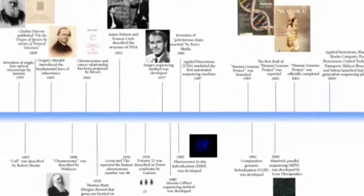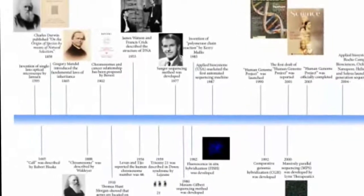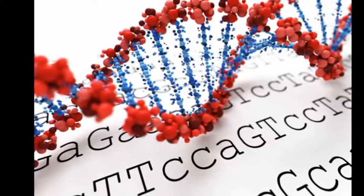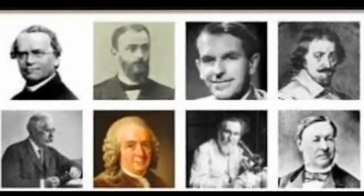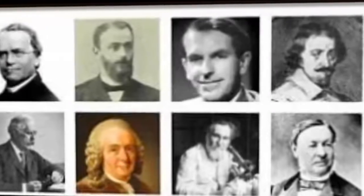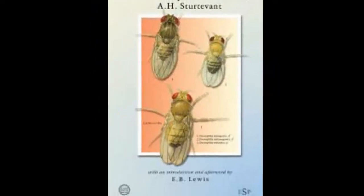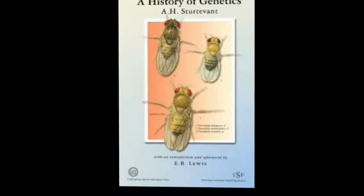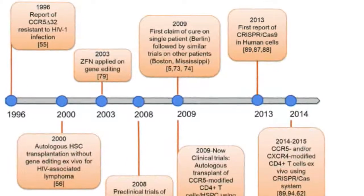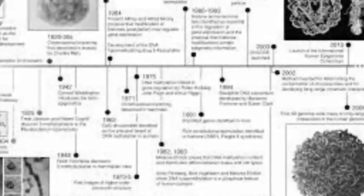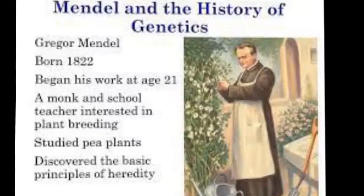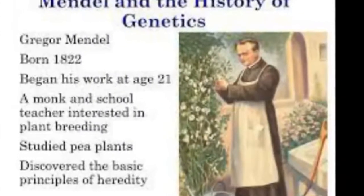From his statistical analysis, Mendel defined a concept that he described as a 'character.' In only one sentence of his historical paper, he used the term to designate the material creating the character: 'So far as experience goes, we find it in every case confirmed that constant progeny can only be formed when the egg cells and the fertilizing pollen are of like character, so that both are provided with the material for creating quite similar individuals, as is the case with the normal fertilization of pure species.' Mendel's work was published in 1866 as Versuche über Pflanzenhybriden in the Verhandlungen der Naturforschenden Vereins zu Brünn, following two lectures he gave on the work in early 1865.